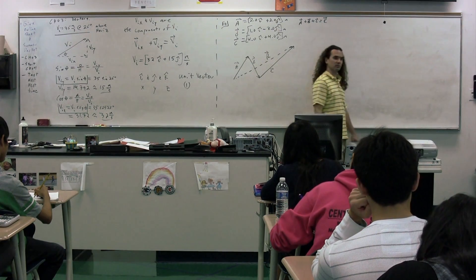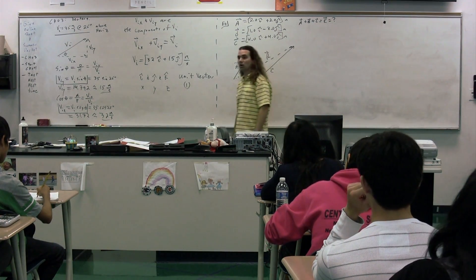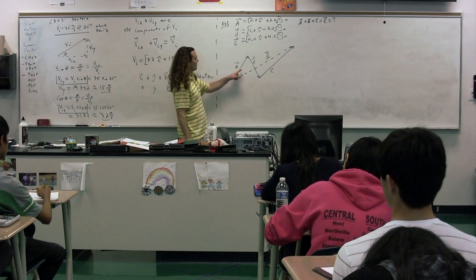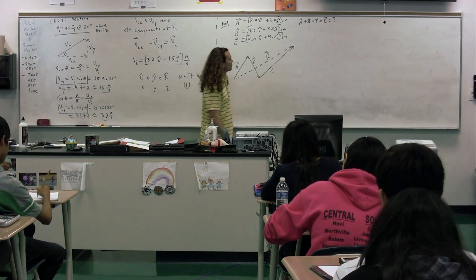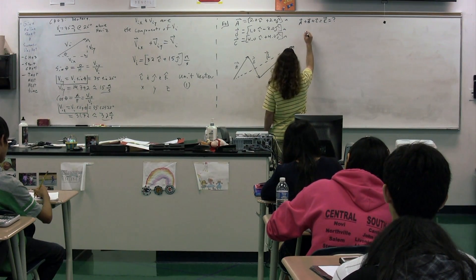In order to figure out R, the resultant vector, we could then simply go through and use the unit vectors. The easy way to add this all together is to do A,